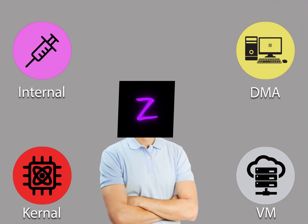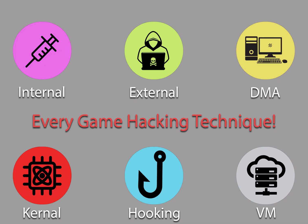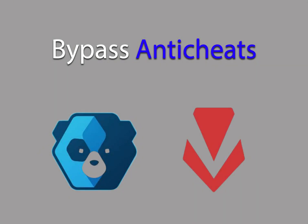In today's video, we're going to break down how cheats actually work in Fortnite. We'll be covering six key concepts you'll hear often in the game hacking world: internal, external, DMA, kernel-level cheats, hooking, and the use of virtual machines. Fortnite's anti-cheat system, Easy Anti-Cheat, is one of the more advanced protections in gaming, so understanding how these methods interact with it can give you a clear view of both how cheats function and how they're detected.